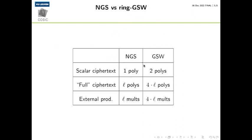The main source of gain is the following. When we compare NGS with GSW, we have a scalar ciphertext — in our case it's just one polynomial instead of a pair of polynomials. A full ciphertext in our case is a vector of L polynomials, while in GSW it is a matrix with four times L polynomials. Because of this, the external product costs only L multiplications in our case instead of four times L.